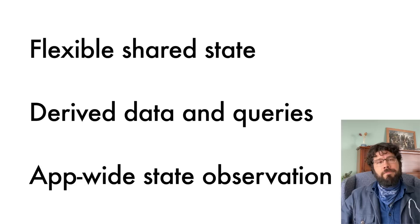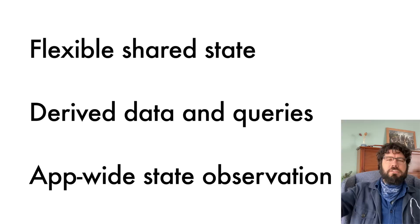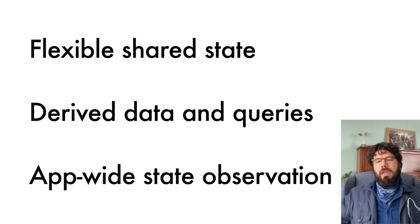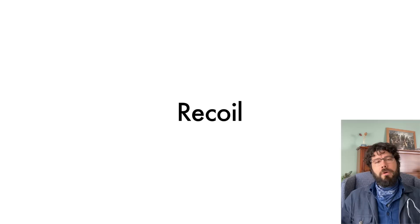It solves three basic issues. The first is flexible shared state — the ability to have different things in sync at different parts of the React tree in a way that's really performant. Secondly, derived data and queries — the ability to compute things based on changing state efficiently and robustly so that we can move quickly and not have bugs. And finally, app-wide state observation for things like time travel, debugging, undo support, persistence, logging — the ability to observe everything happening in the app from some component.